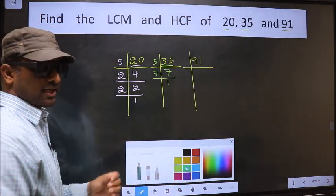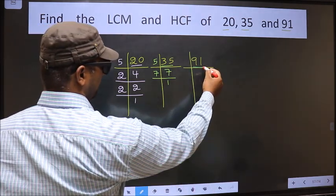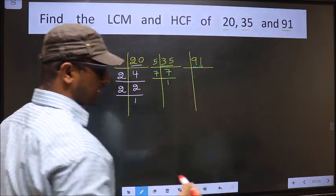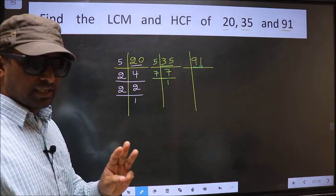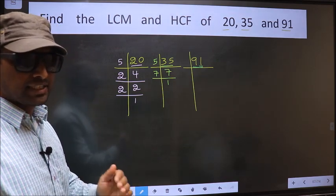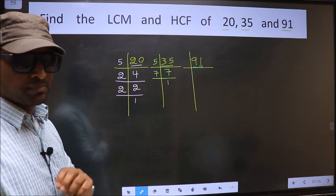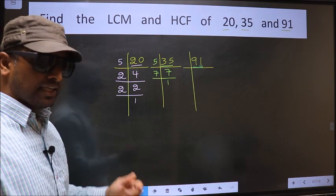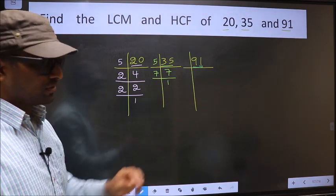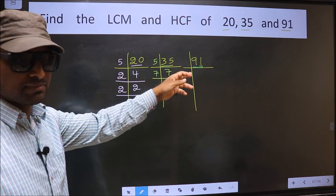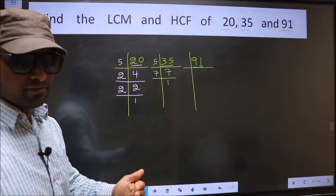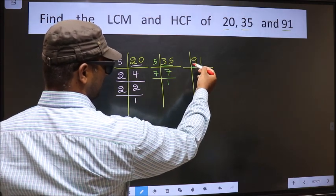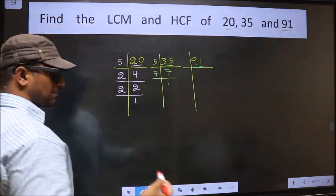Now the other number, 91. Last digit 1, not an even number, so this number is not divisible by 2. Next, prime number 3. To check divisibility by 3, we should add the digits. That is 9 plus 1 is 10. Is 10 divisible by 3? No. So this number is also not divisible by 3. Next, prime number 5. Here the last digit is neither 0 nor 5, so this number is not divisible by 5.